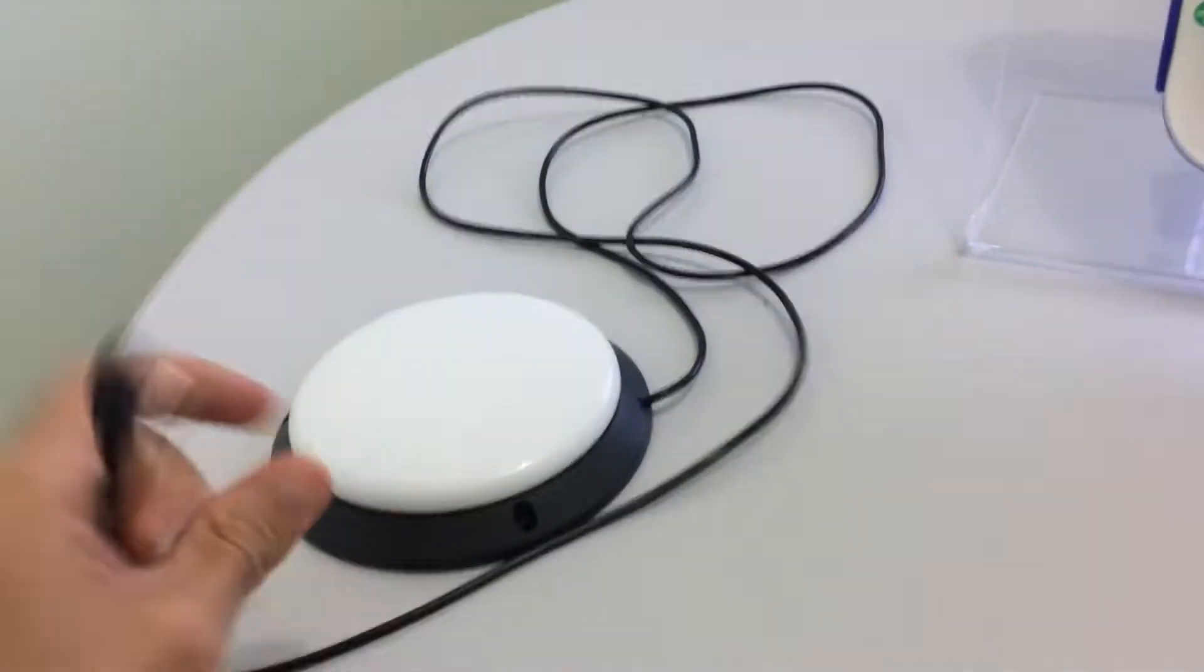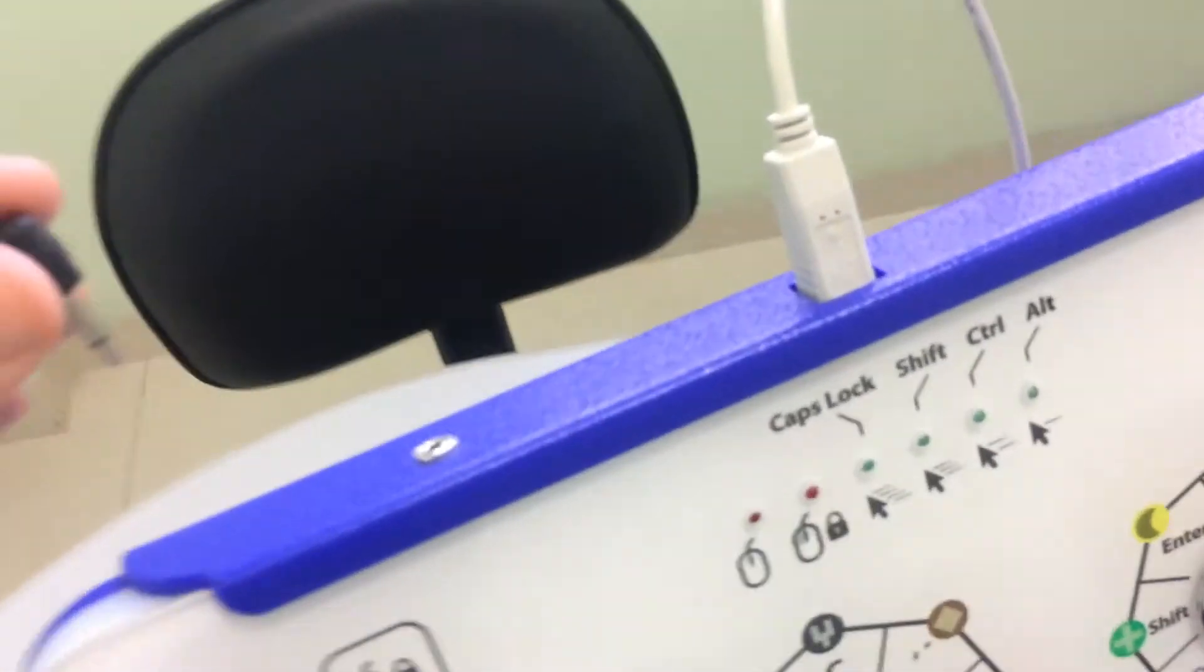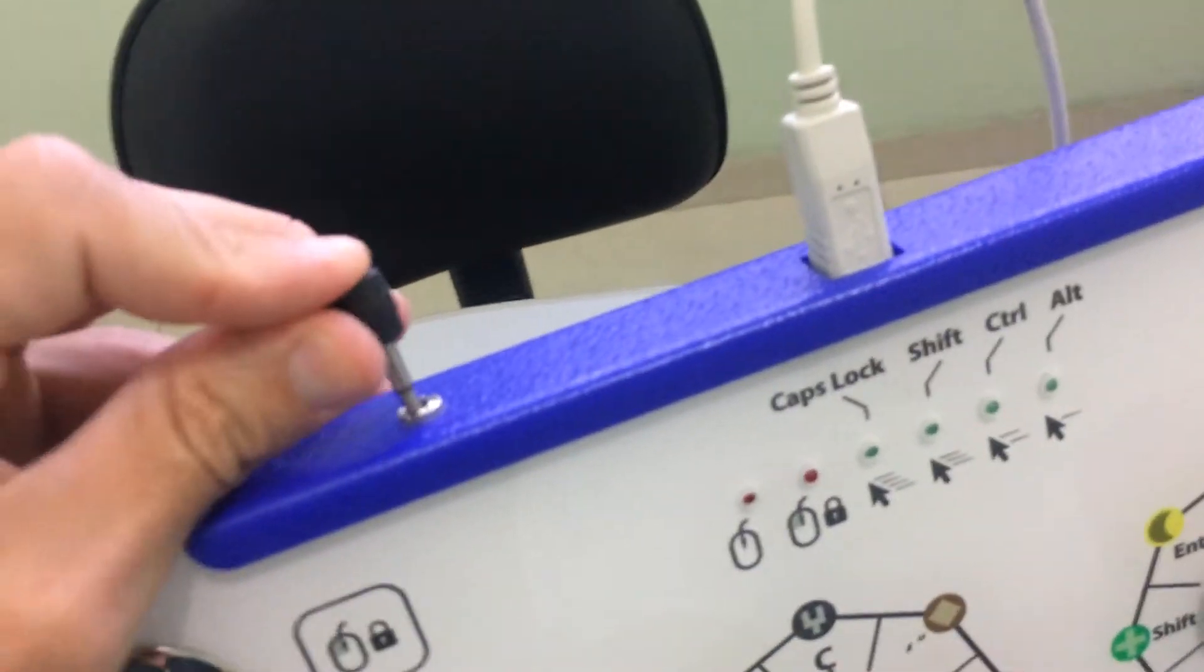In this example, we are going to use a regular switch button. You just have to plug it in its connector at the upper side of the KEYX.